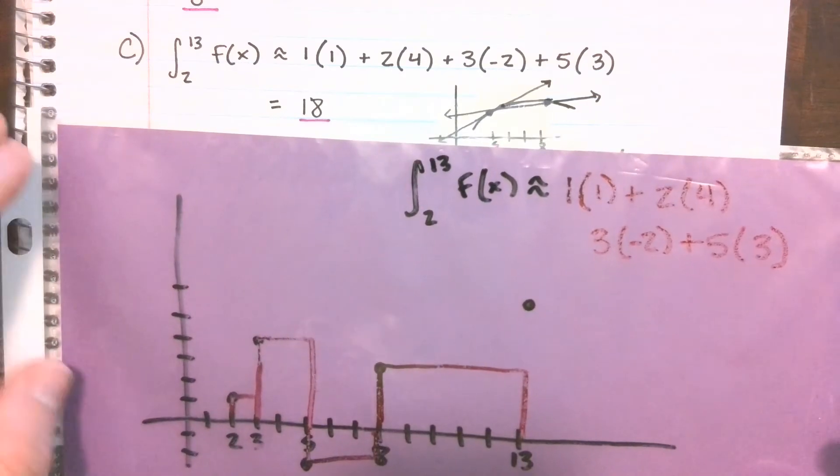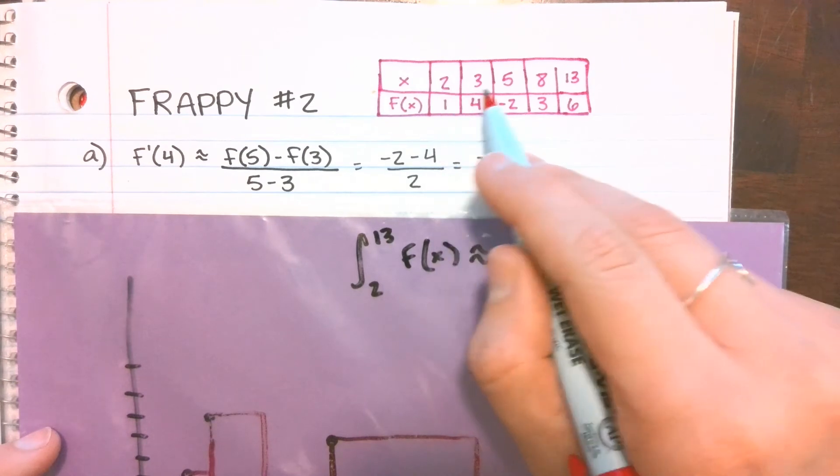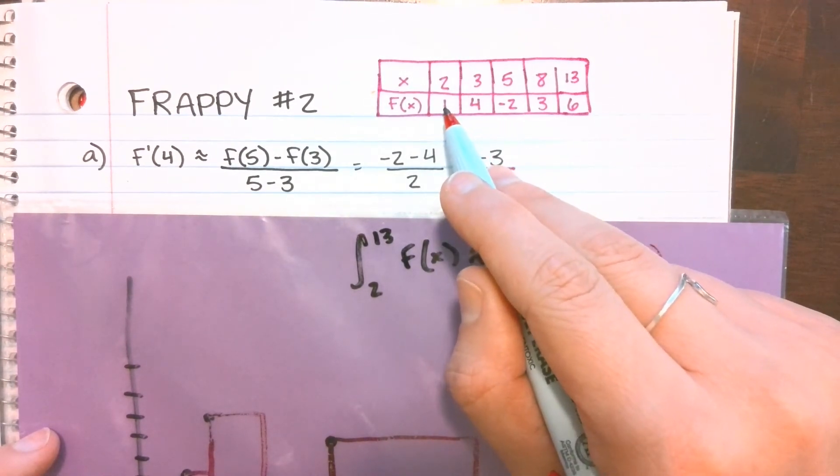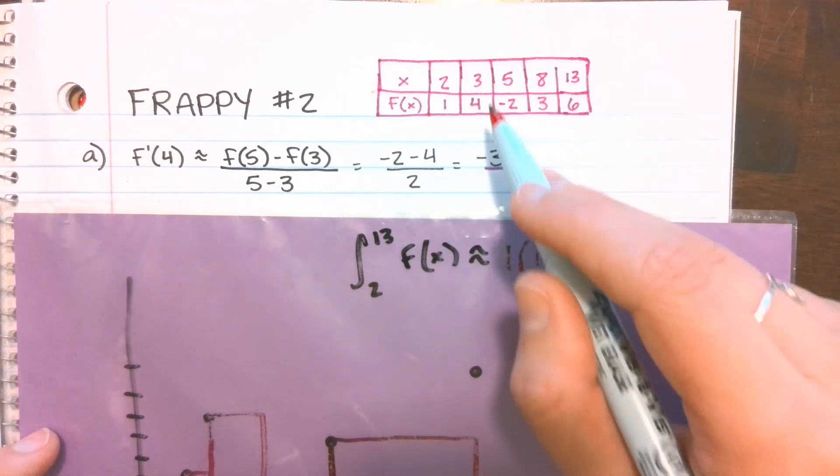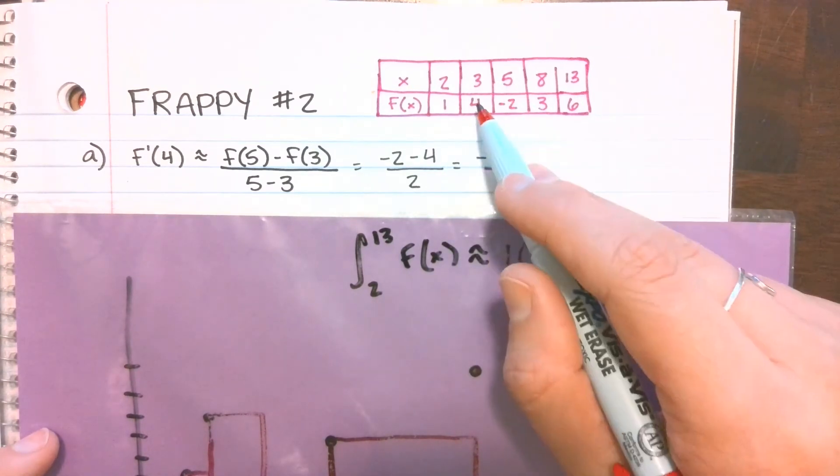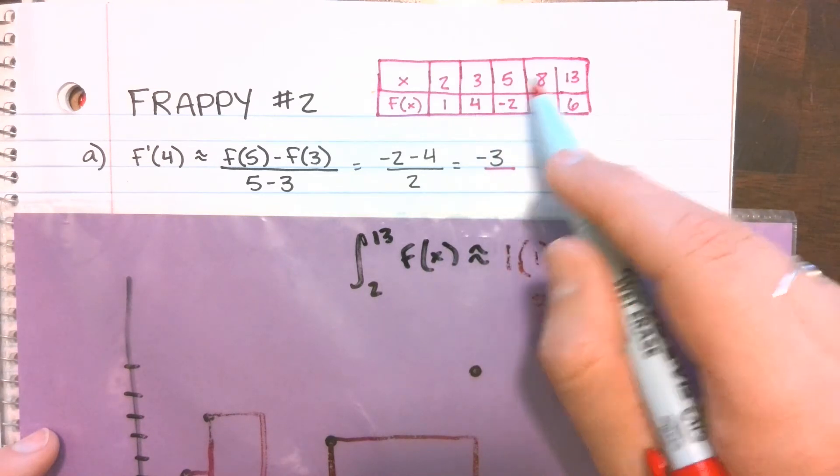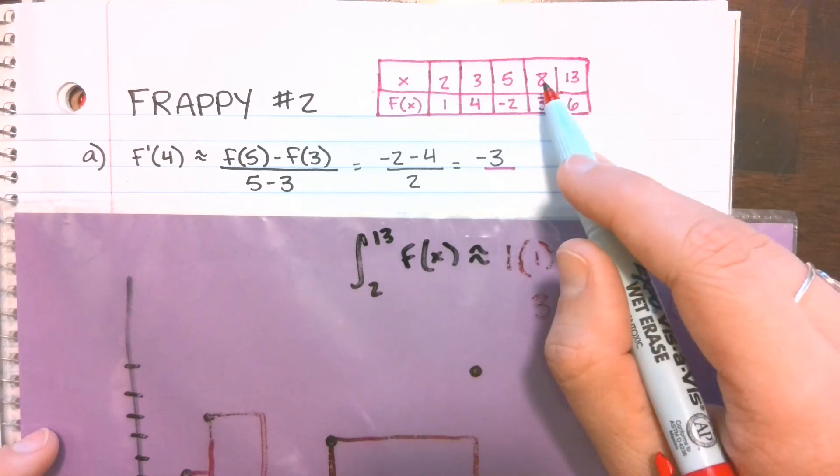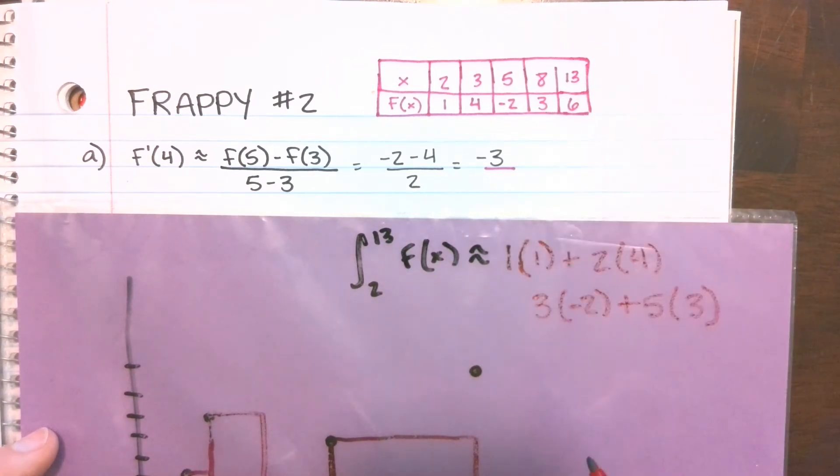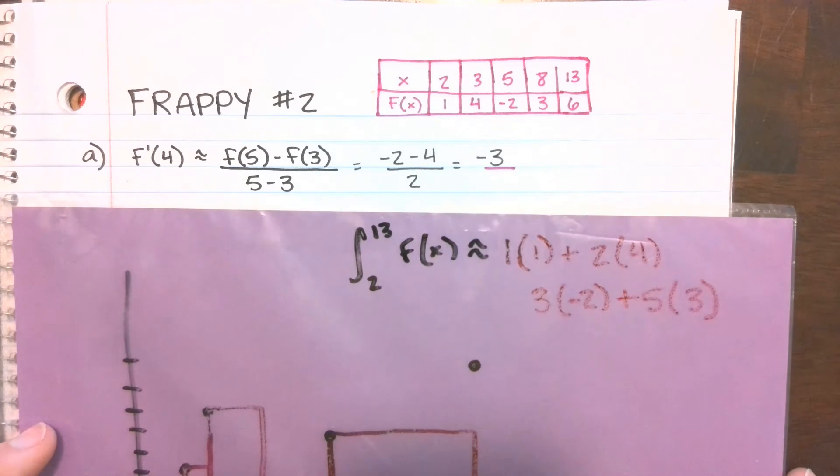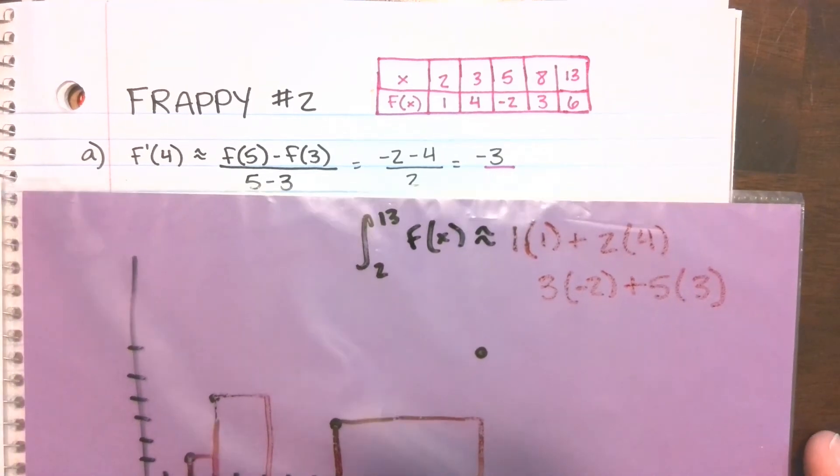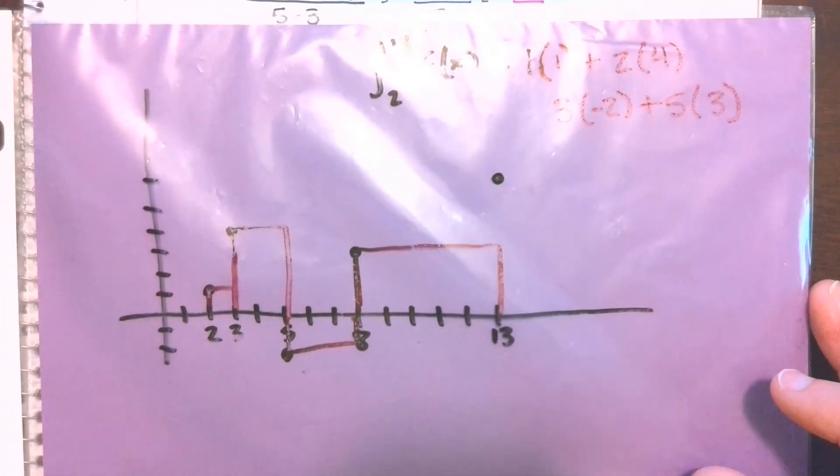But again, I didn't necessarily need to draw this. I could just look at my table and say, okay, for that first rectangle, a width of 1, and then I'm using the height on the left, so times 1. In between 3 and 5, a width of 2, using my height on the left. 5 and 8, a width of 3, and then using my height on the left. 8 and 13, a width of 5, using my height on the left. So it can be done pretty easily with right or left Riemann sums when you're given a table like that without drawing it.